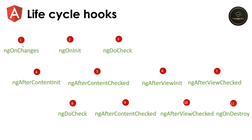The first method that gets triggered is ngOnChanges, when the component input properties are updated. If the component has no inputs, then this hook is not triggered. Next is ngOnInit. This hook is called only once when the component is initialized and data that the component needs to display is fetched. If you want to execute any logic during initialization, you can put that logic in this hook.